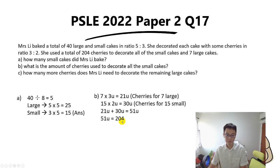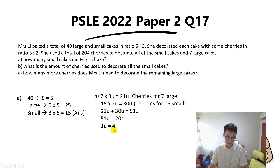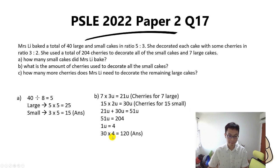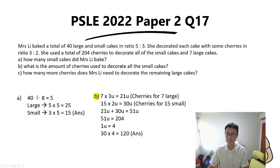To find one unit, we take 204 divided by 51, giving us one unit equals 4. For Part B, to find the number of cherries used to decorate all the small cakes, we take 4 times 30, since 30 units represents the cherries for all small cakes. So 30 times 4 equals 120. That's the answer for Part B.